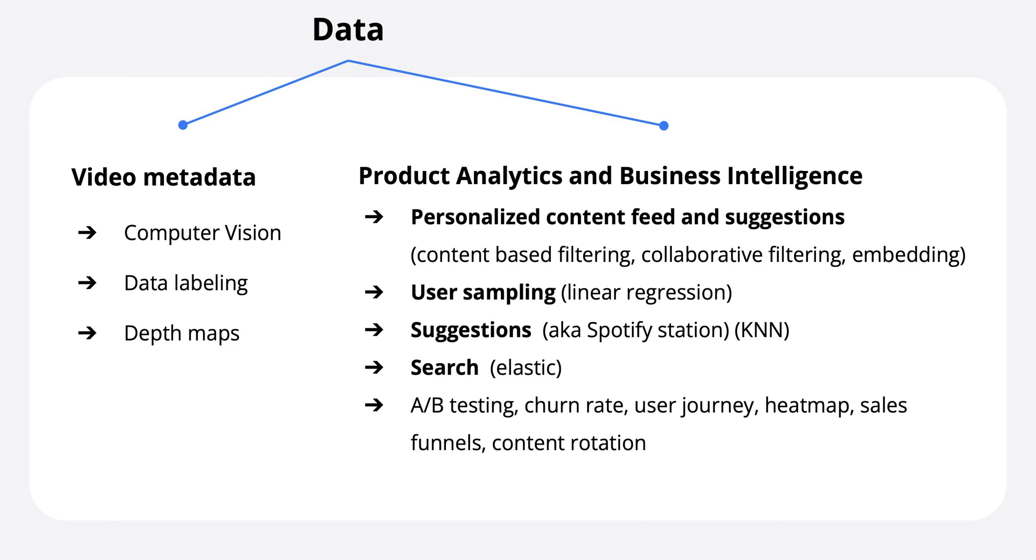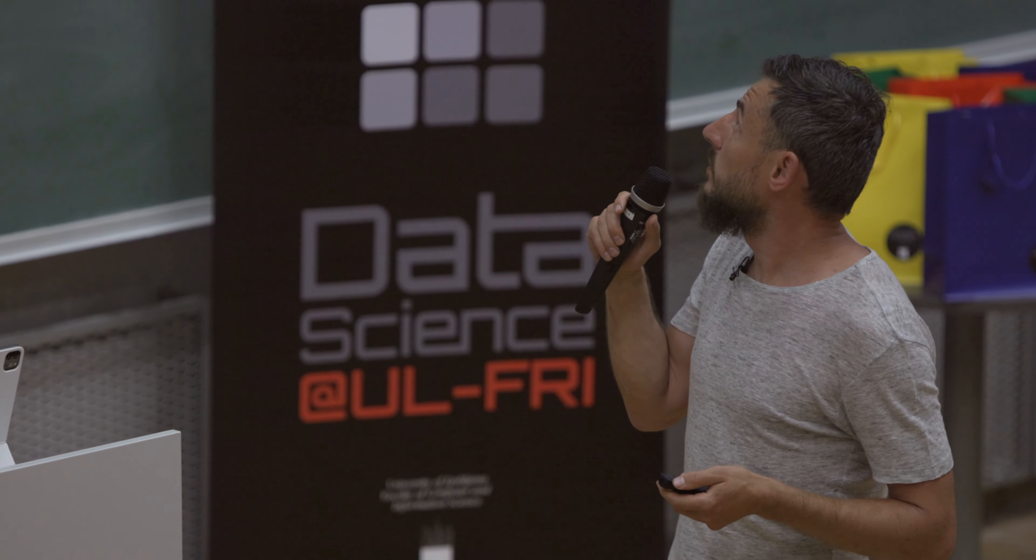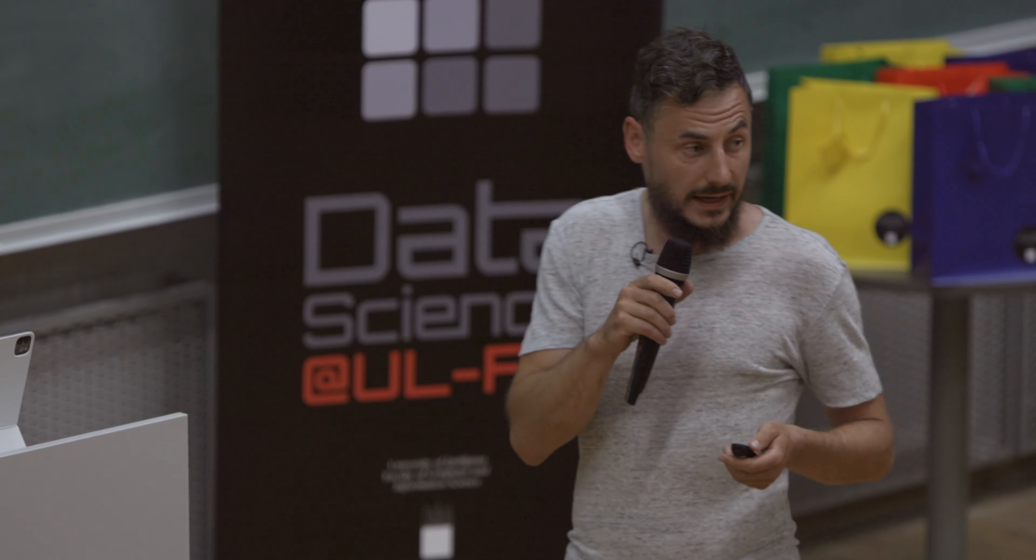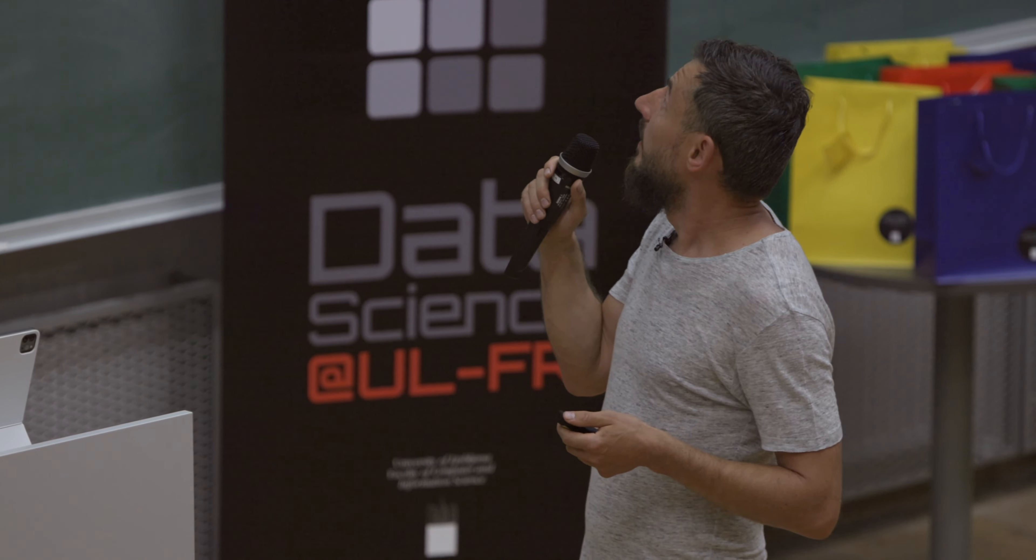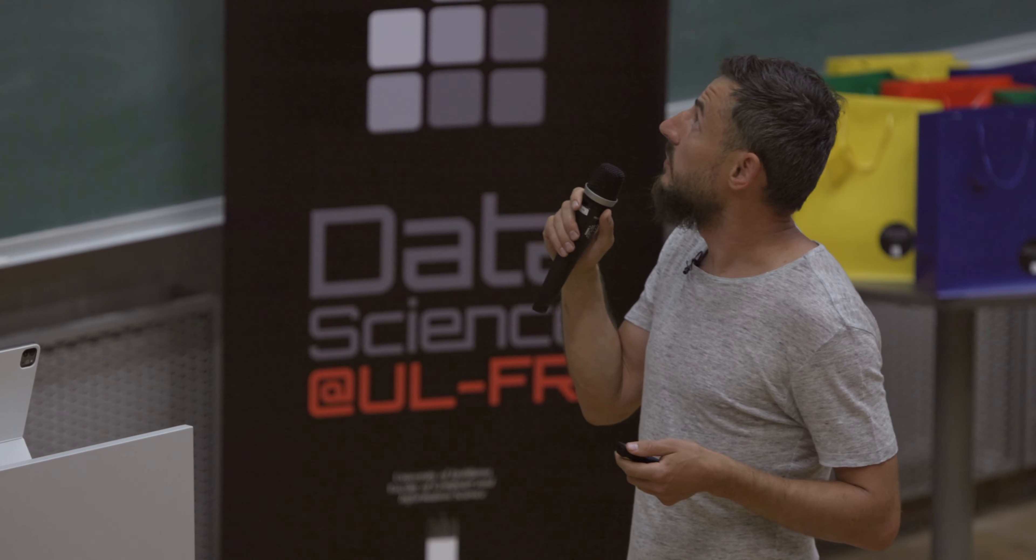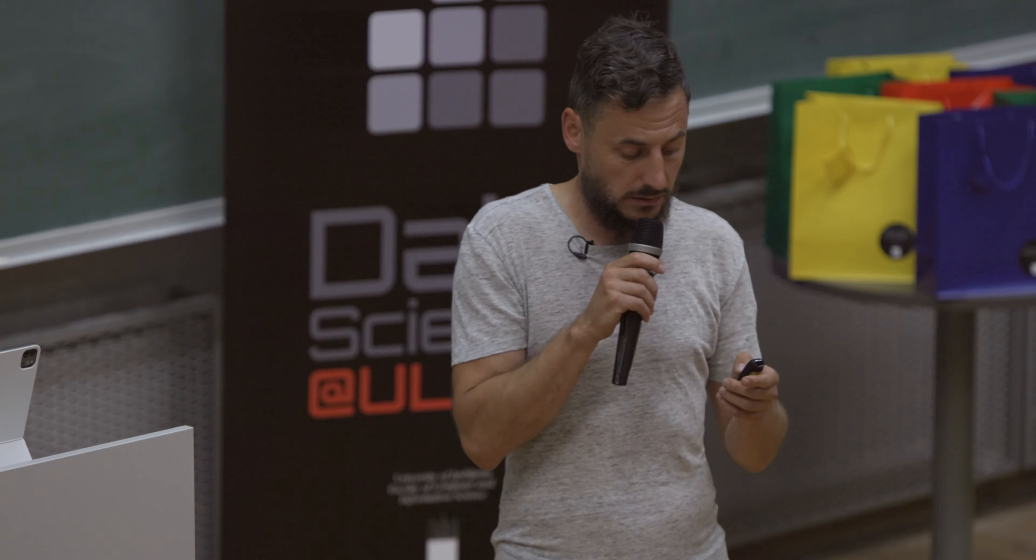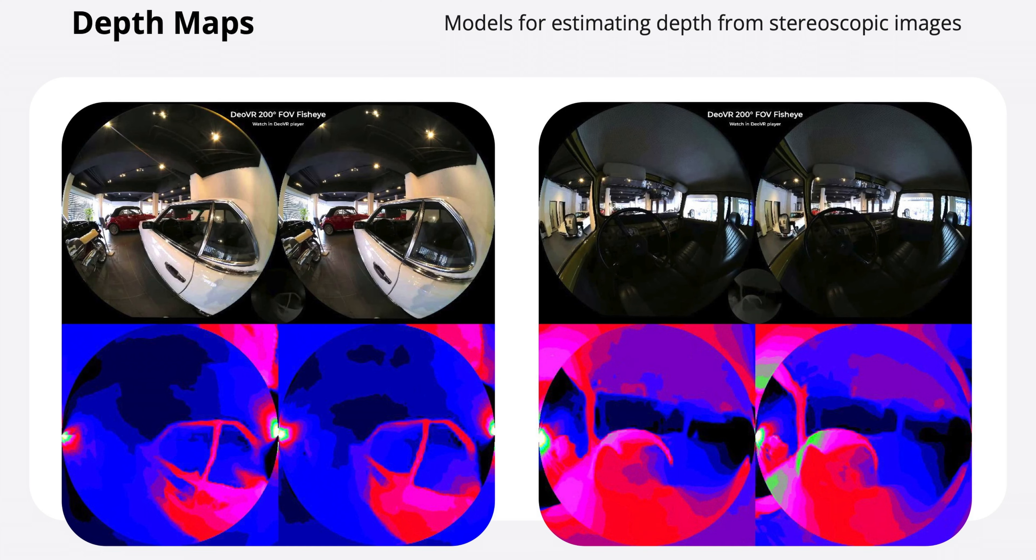So first part of data is video metadata, something we can extract from the image that we get. It's basically computer vision, data labeling, depth maps are our priorities, but there is more on top of that. And then we use data for product analytics and business intelligence. So basically personalized content feed. TikTok, YouTube is a great example, probably Facebook, super crazy. TikTok is sick. User sampling suggestions, search and many other user analytics data. Spotify has really great suggestions. So we try because we are building an ecosystem, we can fit everything in.